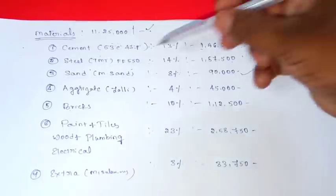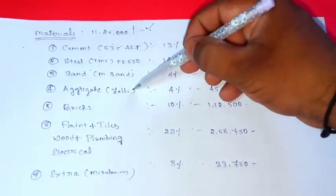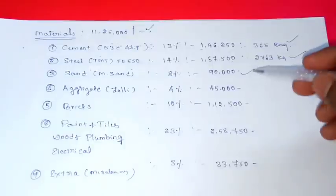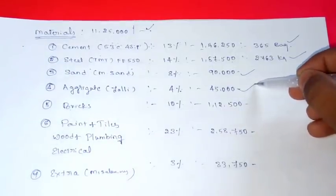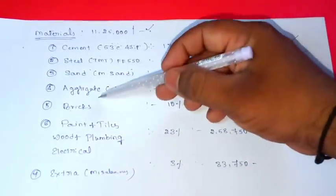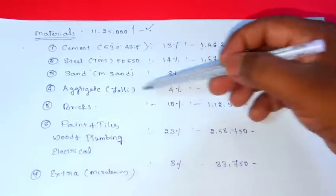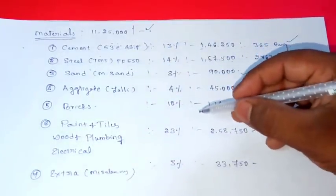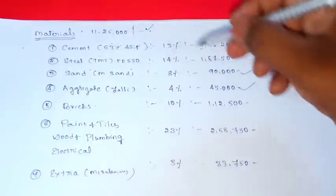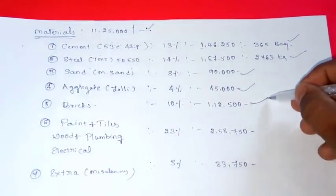This is aggregate. Aggregate is jelly, 40mm, 20mm. This is 4%, 4% is 45,000. This is 6 inches, 4 inches bricks is 10%. Total cost is 1,50,000.